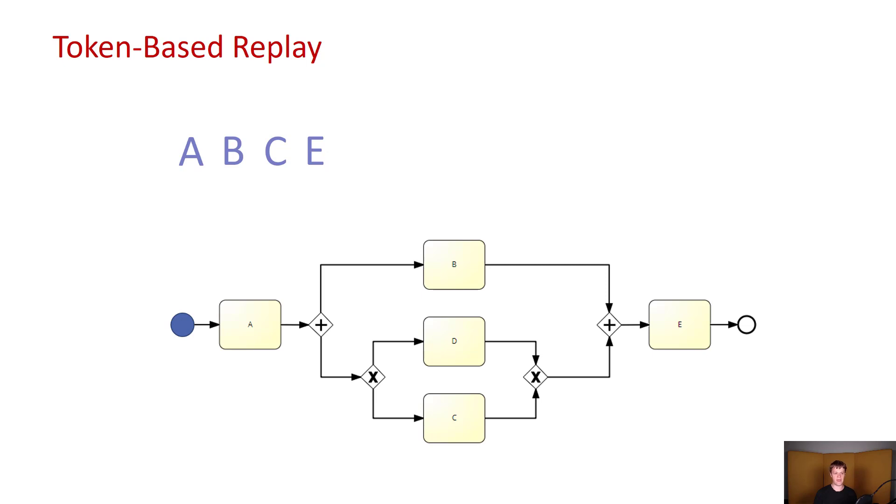The first event is going to be A. Well, this is simple. We just move the token forward, executing A and also consuming it from the trace. Then we see that we have to execute B. But in order to do that, we have to go through the parallel split gateway, which is going to split our single token into two tokens. Then we can execute B and just move that token forward. The next event that we have to execute is C. But in order to execute that, we have to go through the XOR split gateway, just in this case moving to the lower branch of that gateway. And now we are ready to execute C.